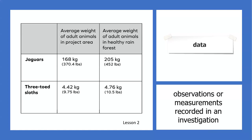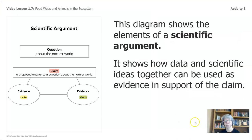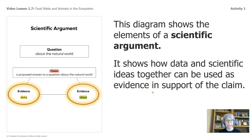Let's review this data table again. This one shows the jaguars and three sloths, their average weight in the project area, and their average weight in the healthy rainforest. We noticed that the jaguars and the sloths in the project area did not weigh as much as the ones in the healthy rainforest. This diagram shows the elements of a scientific argument — how the data and scientific ideas together can be used as evidence in support of the claim.